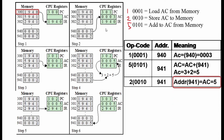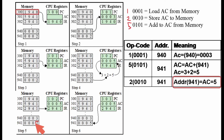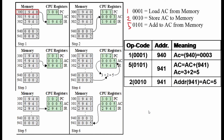In step 5, after finishing instruction at 301, we move to 302. The operation code is 2 — STORE — and the address is 941. So we store what is currently in the accumulator into address 941. That's the full execution cycle.